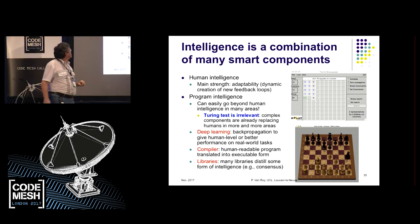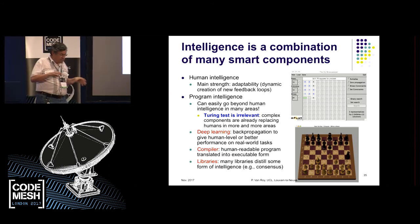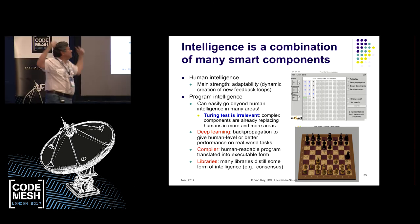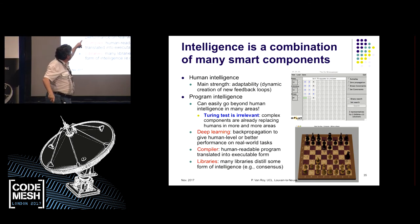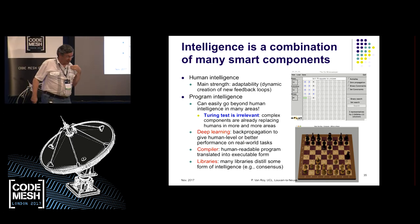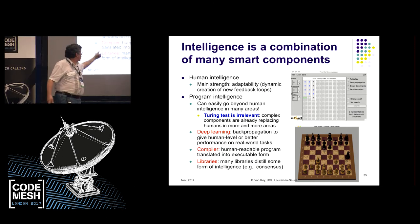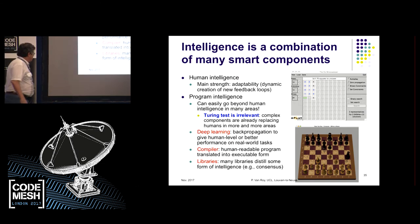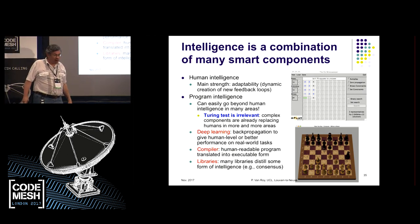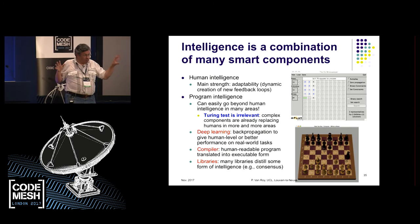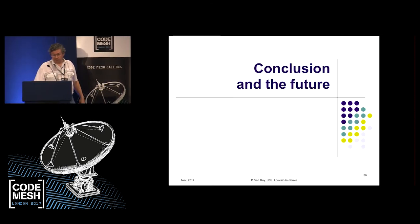Intelligence is not one thing — the Turing test is kind of irrelevant for this. Human intelligence is adaptive; humans are always creating new feedback loops. Deep learning is like a tsunami — it's coming, and you have to have deep learning components in your system. But other components are also smart: a compiler is a smart component that translates human-readable programs into efficient execution. Many libraries distill some kind of intelligence, like consensus. Smartness is in the eye of the beholder, and smart components are things that we add to our systems.